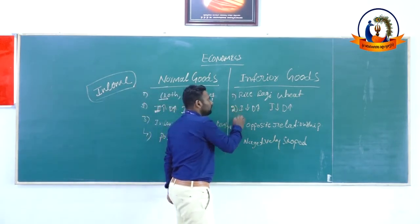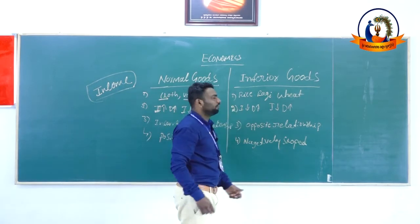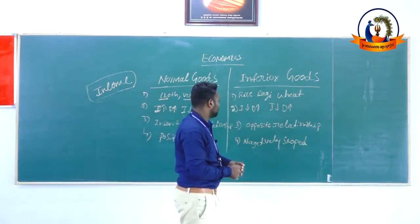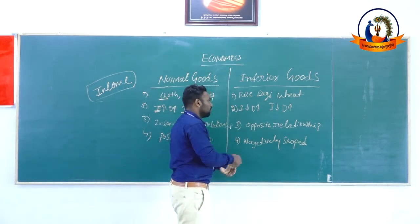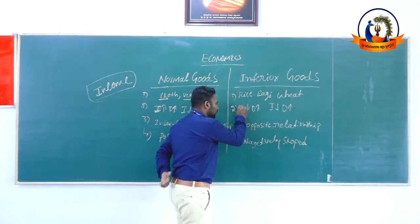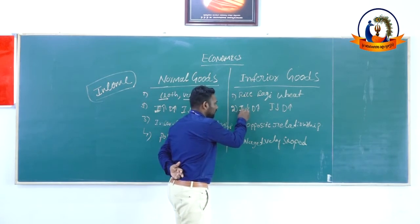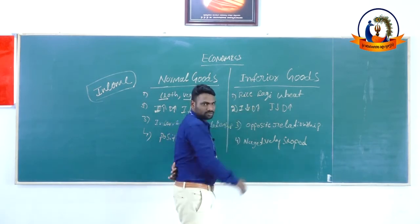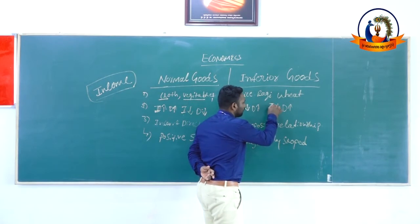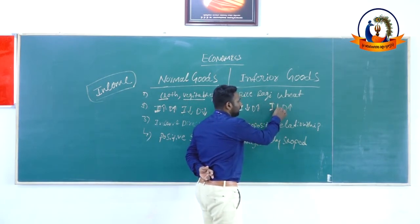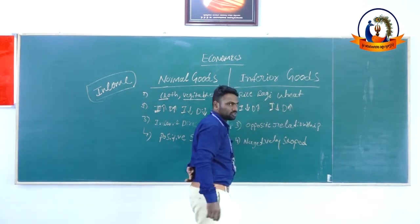For inferior goods, the opposite applies: when consumer income increases, demand decreases. When consumer income falls, demand increases. This is the key difference for inferior goods.